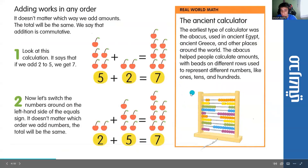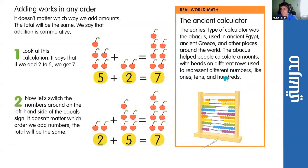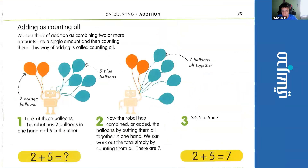Here we have a picture of an ancient calculator called the Abacus. This was used in ancient Egypt, ancient Greece, and a bunch of other places around the world. All right, so all adding is, is just counting up all the objects that you see.